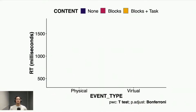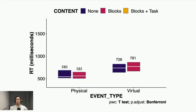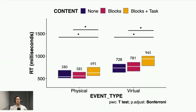We found that there was no significant difference in reaction times for both physical and virtual event types when comparing conditions without the additional task. However, we found a significant increase in reaction times for both physical and virtual event types when adding a task to the virtual content compared to conditions without a task. We also found that participants were significantly quicker in reacting to physical LEDs compared to virtual LEDs, which post-experiment interviews attributed to the visibility of the physical LEDs on their peripheral vision.